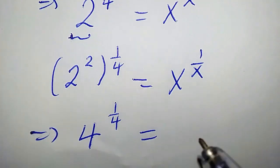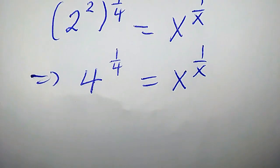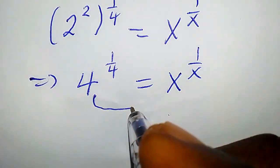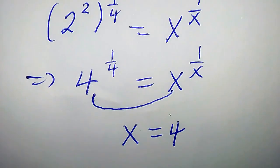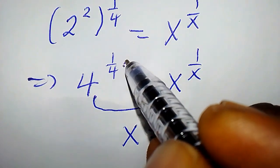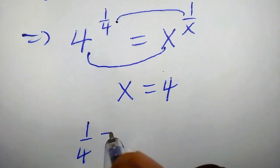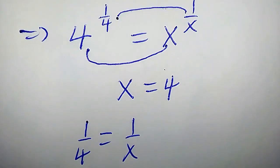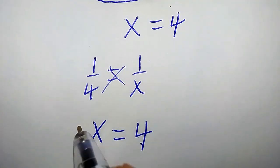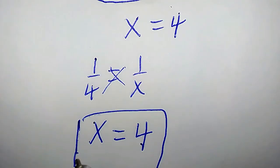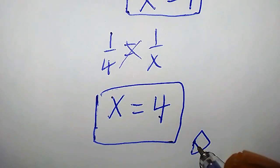Looking at this, if we compare the bases we get x equals 4. And if we compare the powers, 1 over 4 equals 1 over x, and when we cross multiply we also get x equals 4. So the value of x we're looking for is simply 4.